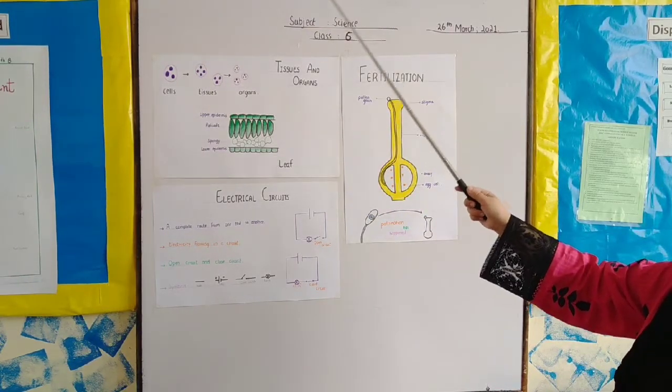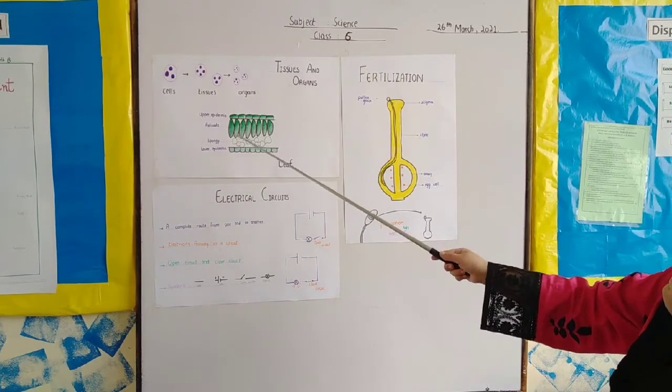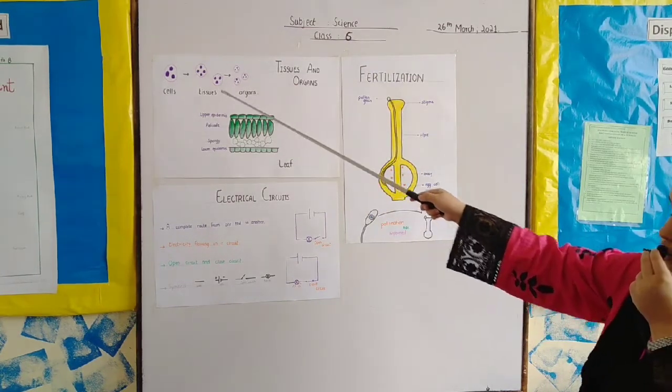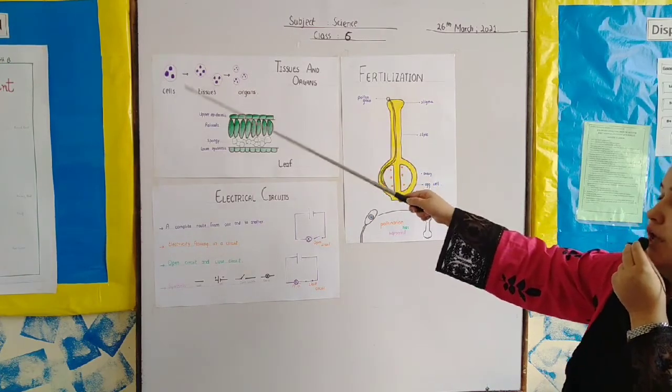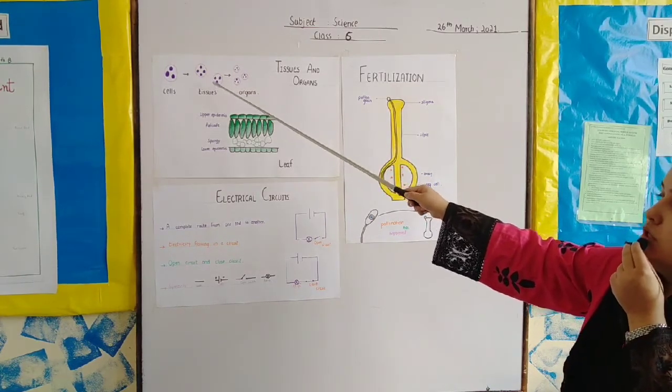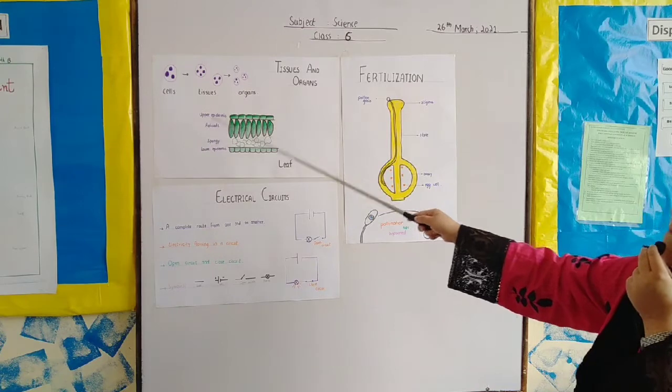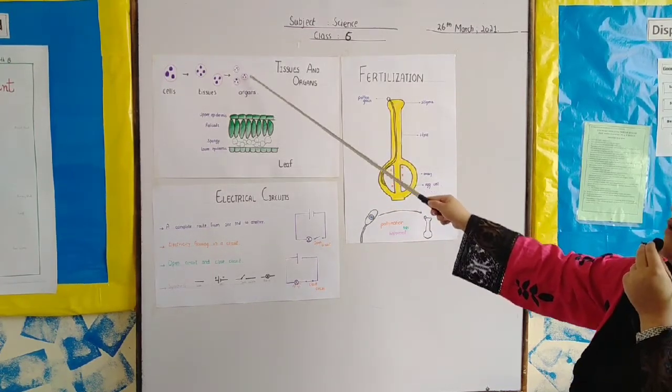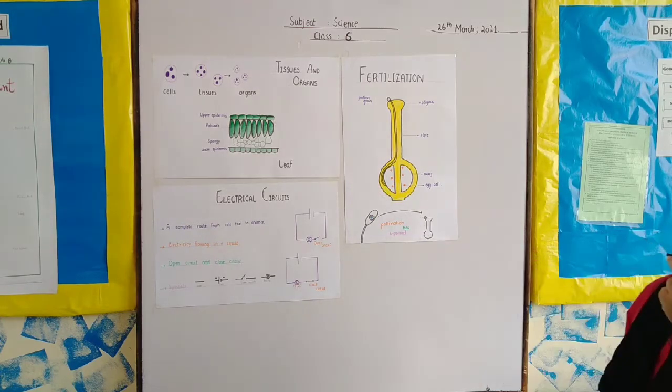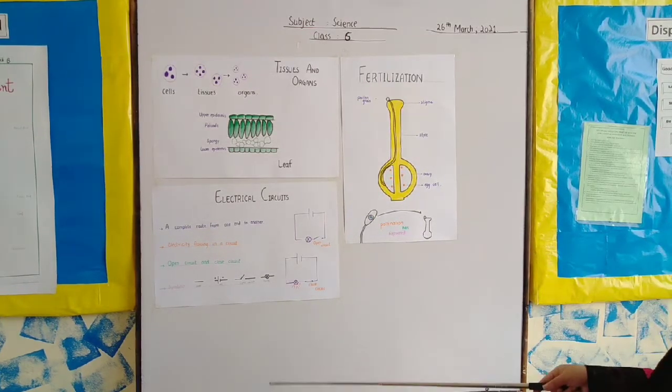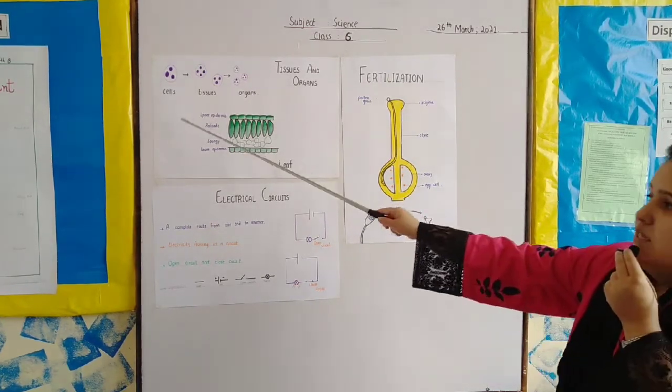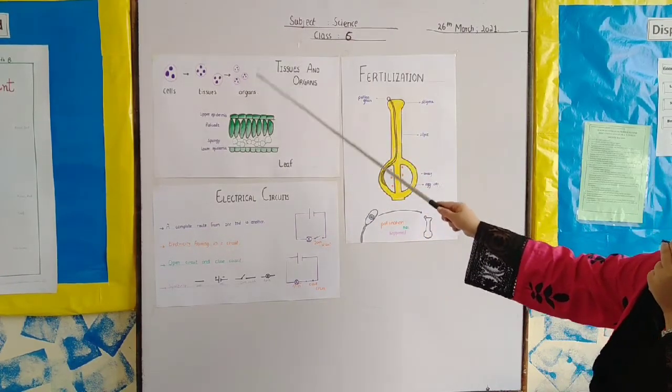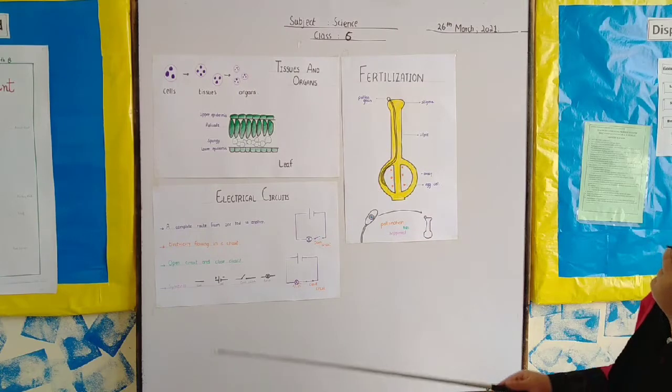Cells which work together, which look similar and do the same job combine together to form tissue. Now tissues which look similar but they do a different job combine together to form an organ. This means that cells combine to form tissues and tissues combine to form organs.